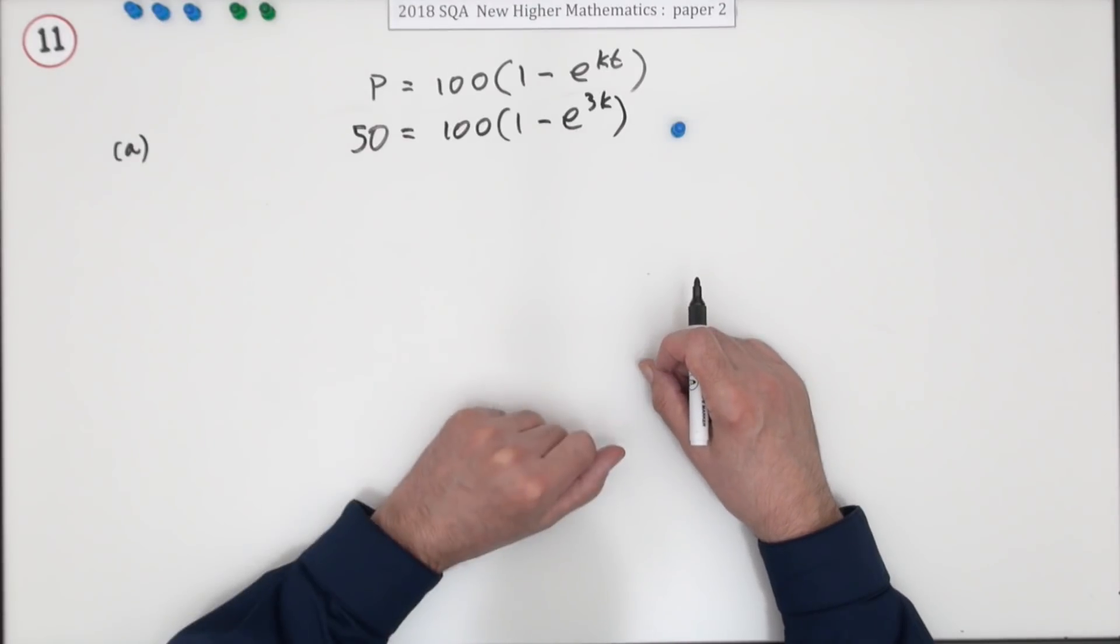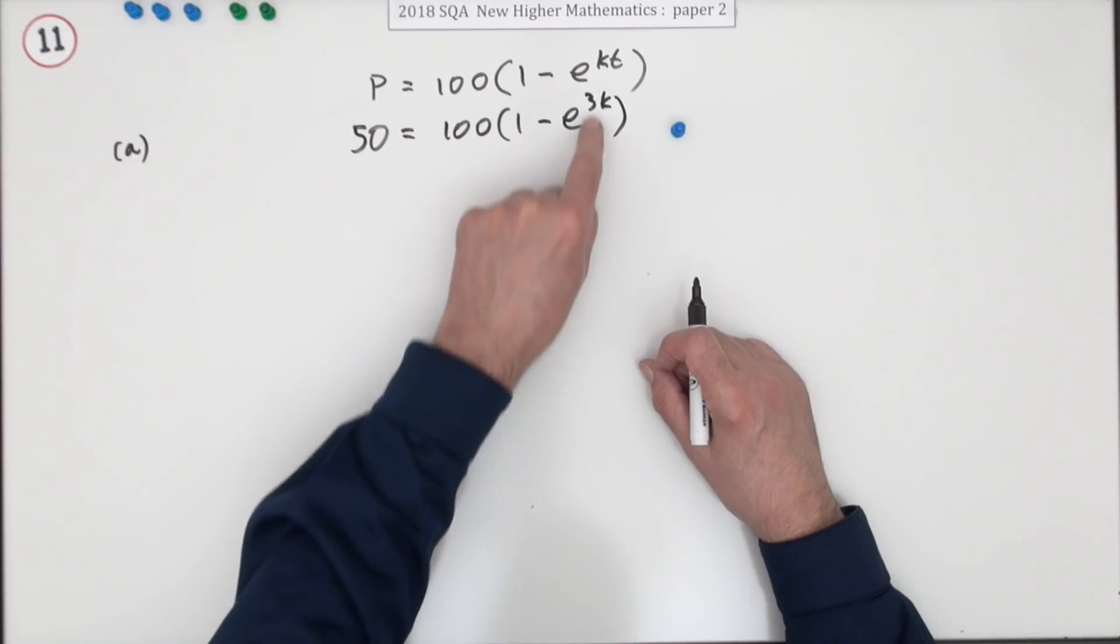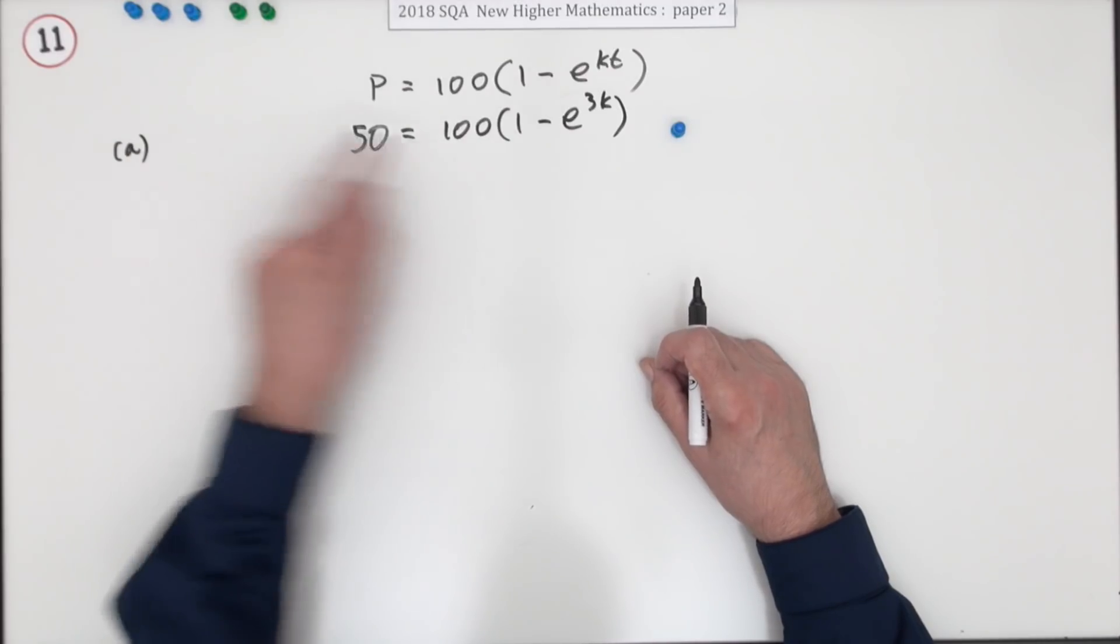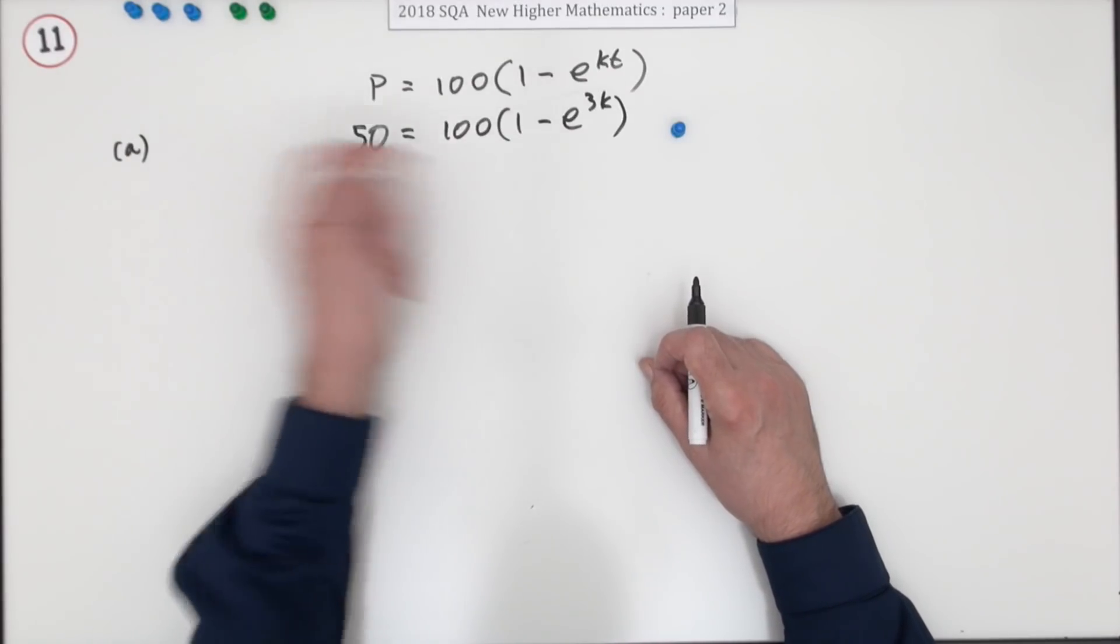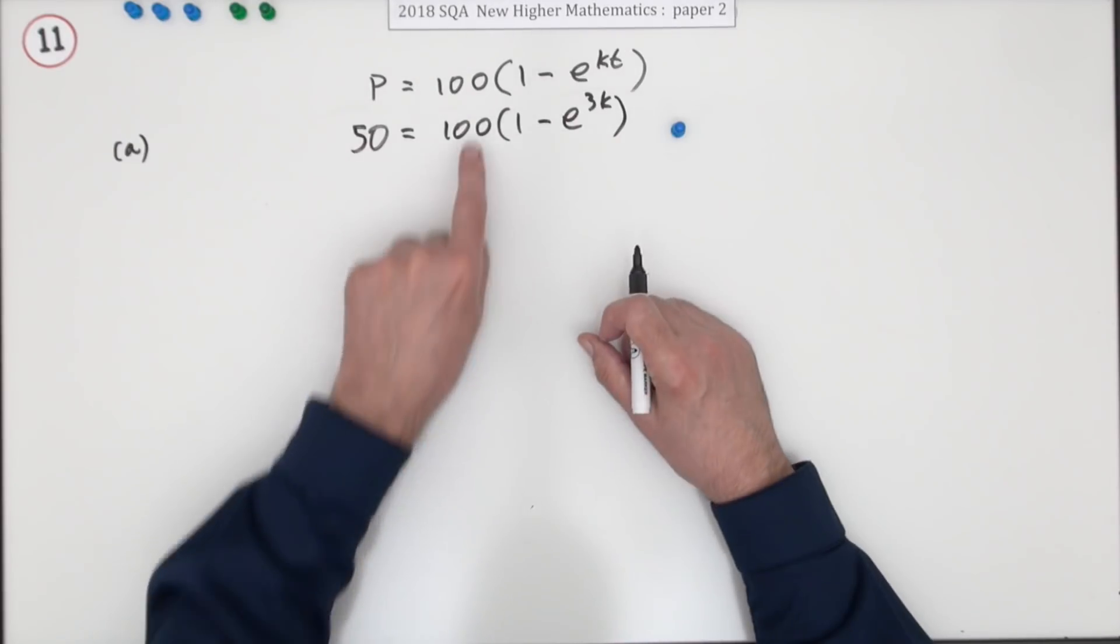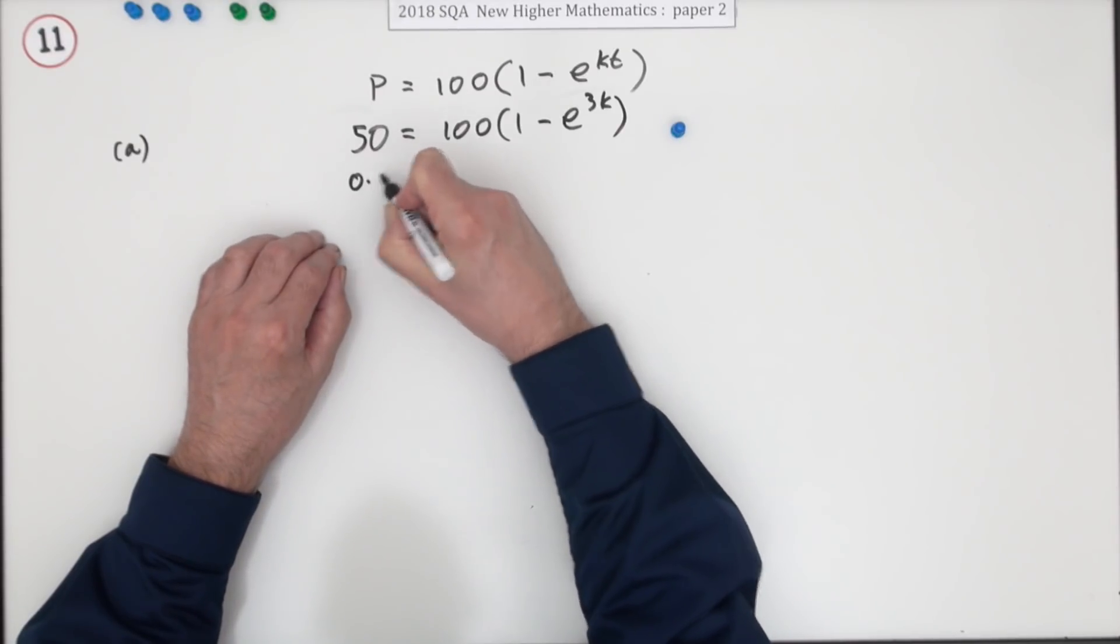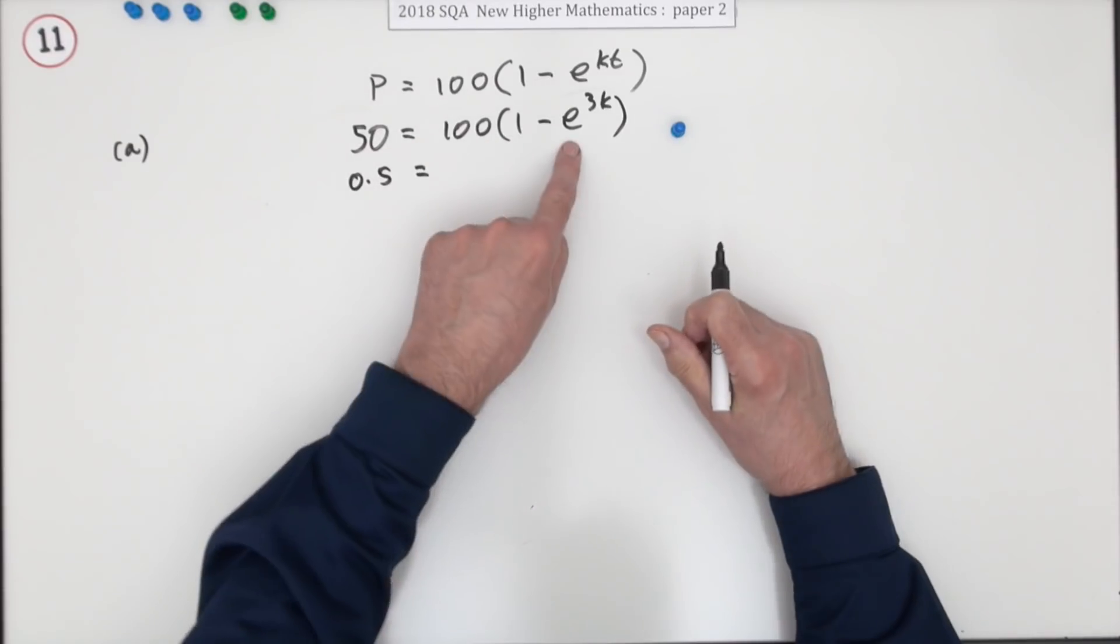Now you've got to solve that equation. There's only one unknown and there's only one mention of that unknown, so you can get at it by peeling off all the bits and pieces. Get rid of the 100, get rid of the 1, get rid of the e, and get rid of the 3. So you could reverse it, but I don't like that negative thing. I'll keep it on this side, take the 100 and cross and divide.